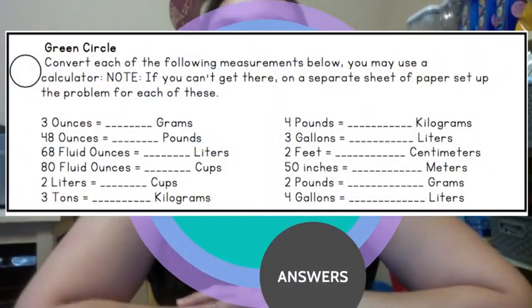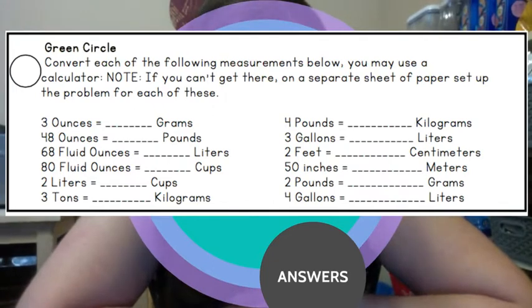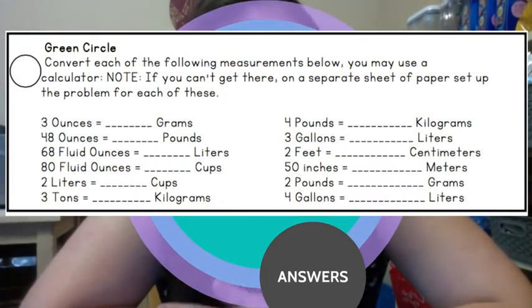Wednesday, green circle. So convert each of the following measurements below. You may need a calculator. If you can't get there, on a separate sheet of paper, set up the problem for each of these.